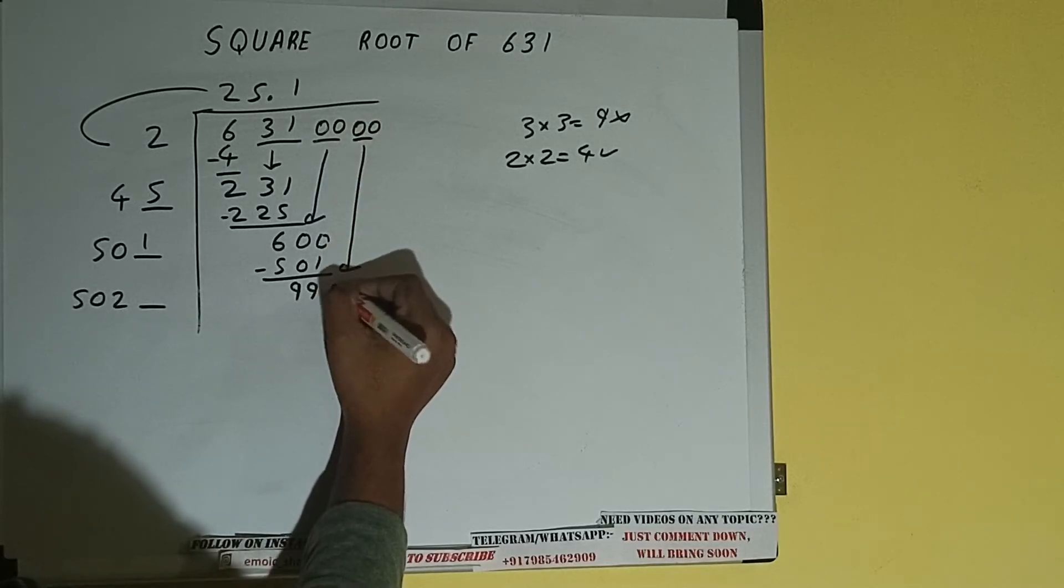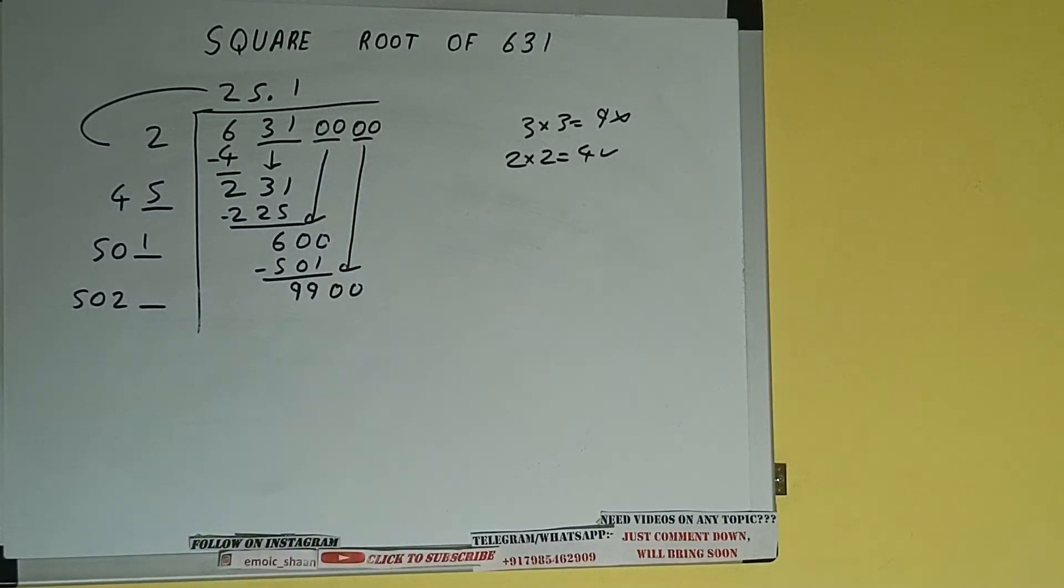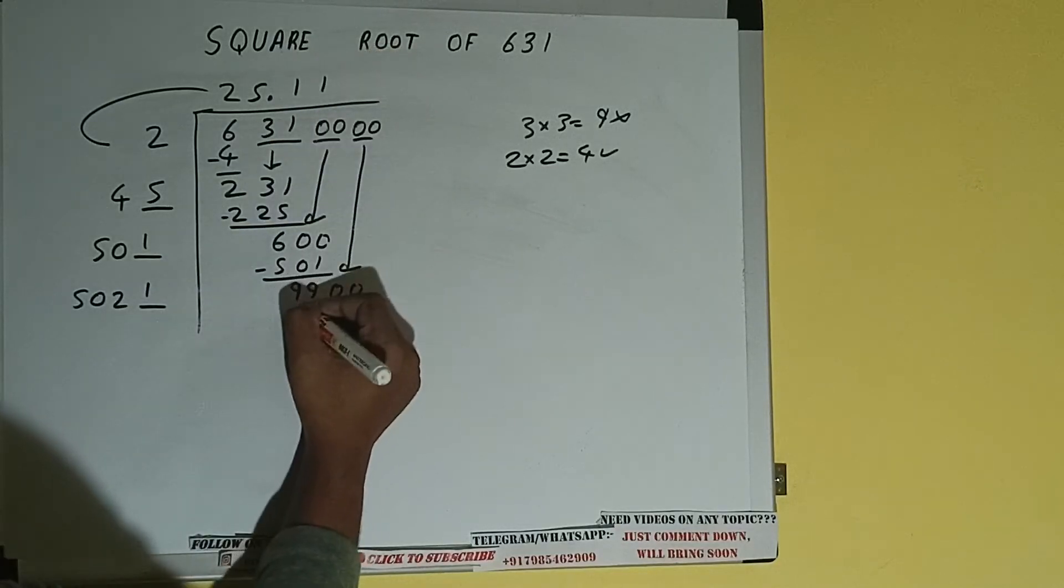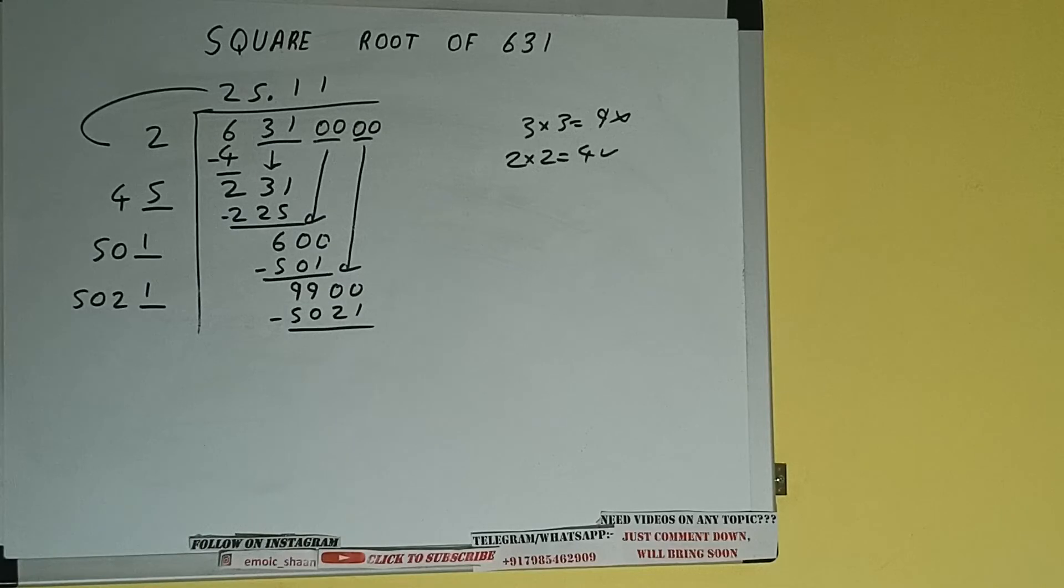It will be 99,100. Now we can write 1 here, 1 here and 1 here, 5021 subtract and we'll be having 4879.